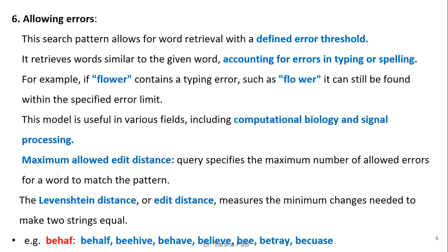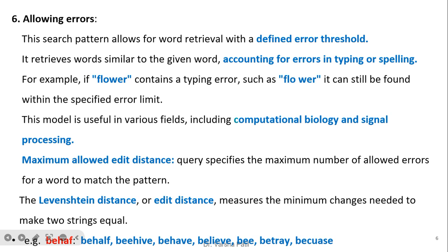Allowing errors is a search pattern that permits word retrieval within a defined error threshold. It retrieves words similar to the given word, accounting for errors in typing or spelling. For example, if 'flower' contains a typing error such as 'flo wr' with a gap, it can still be found within the specified error limit. Similarly, when a user submits a misspelled query to a search engine, the error is corrected and the proper search query is executed. This model is useful in computational biology and signal processing.